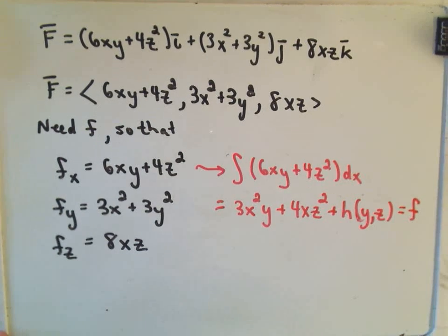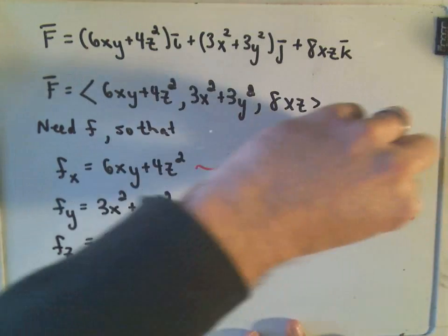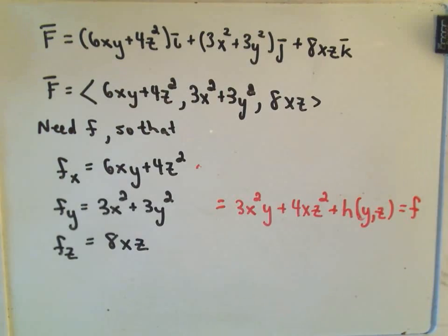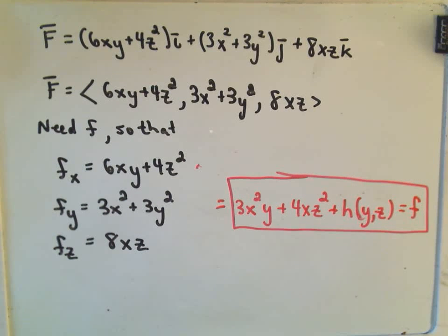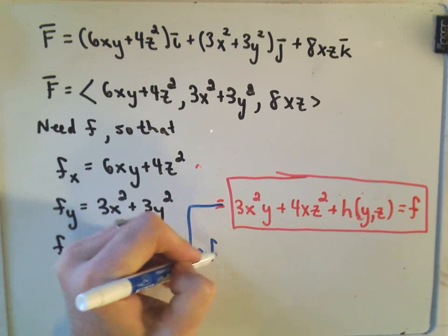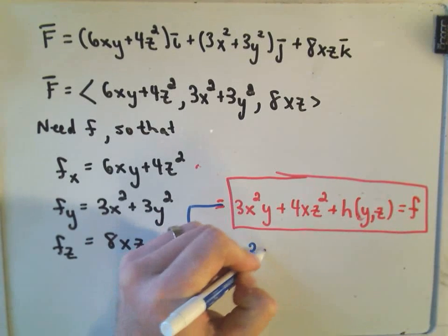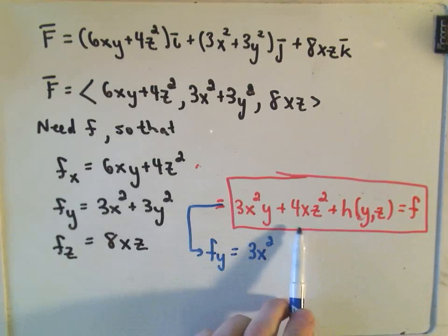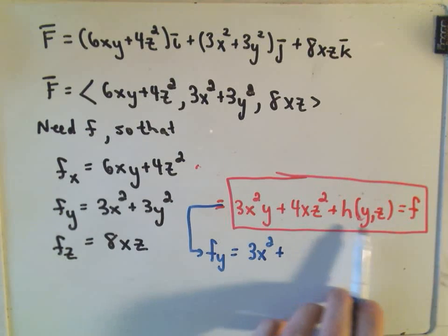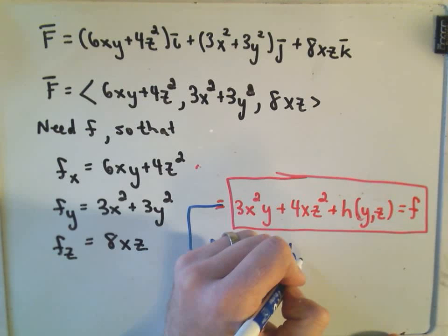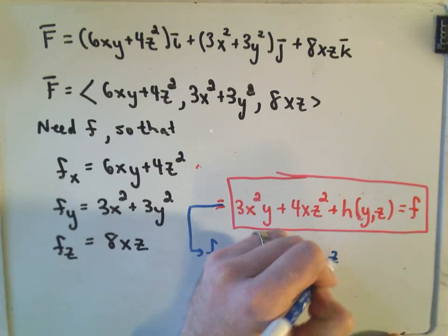So we know our scalar function f has to satisfy that condition: f = 3x²y + 4xz² + h(y,z). Now I'm going to take the partial derivative of this function with respect to y. Taking the partial with respect to y gives us 3x² — the middle term has no y in it, so that's 0 — plus the partial of h with respect to y.